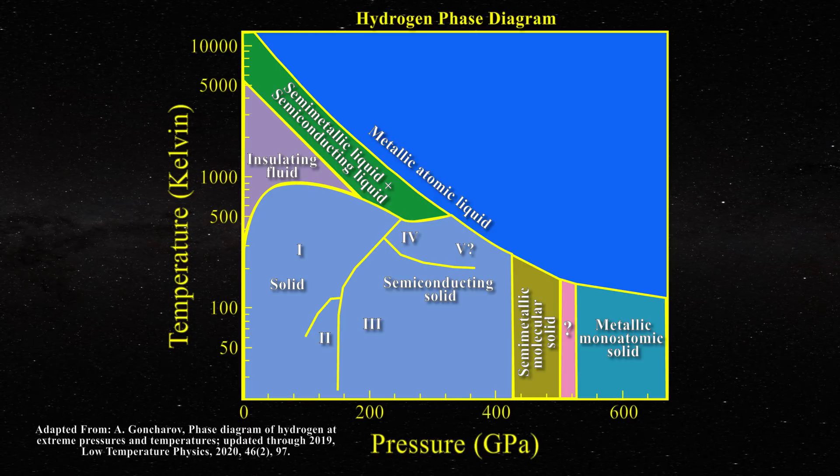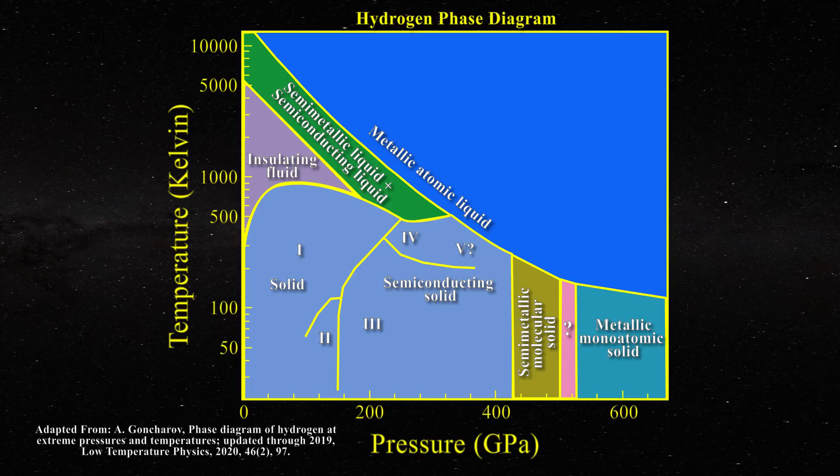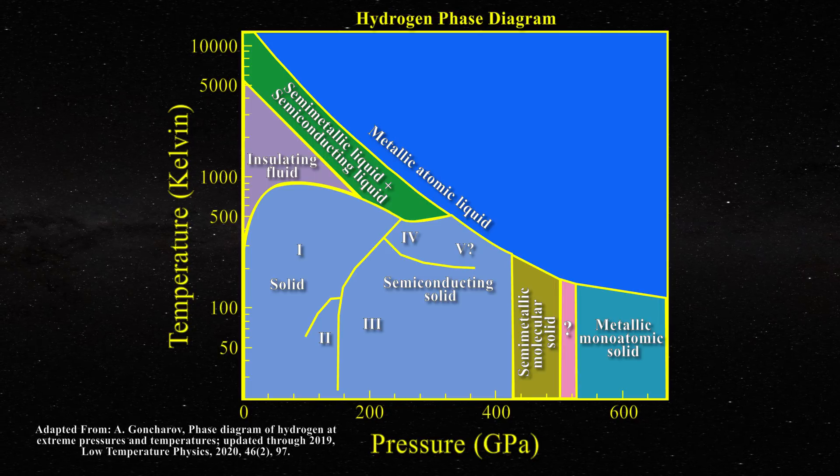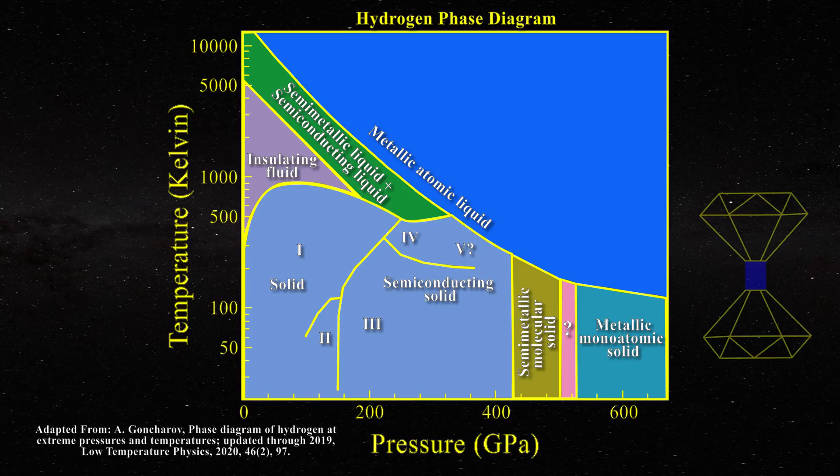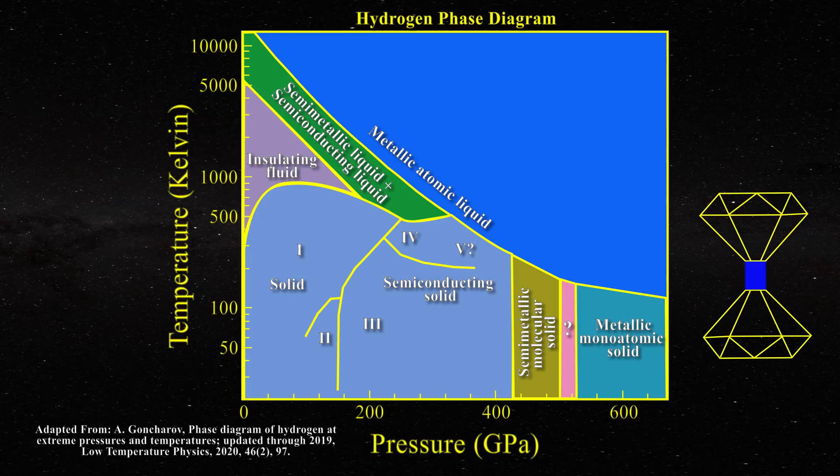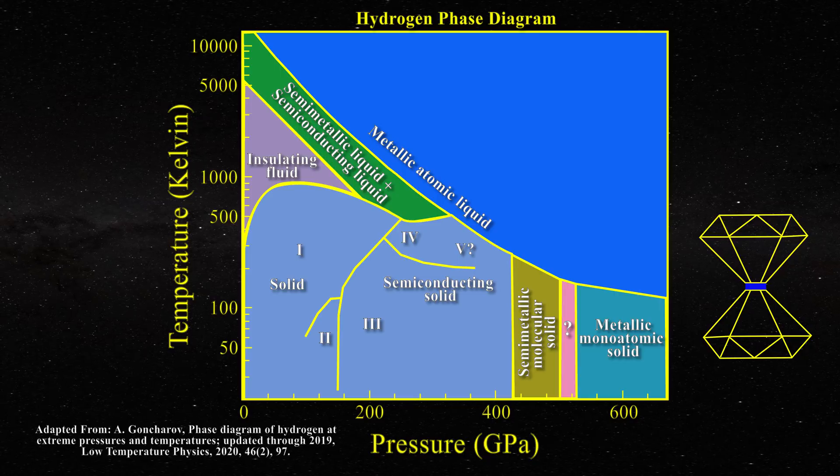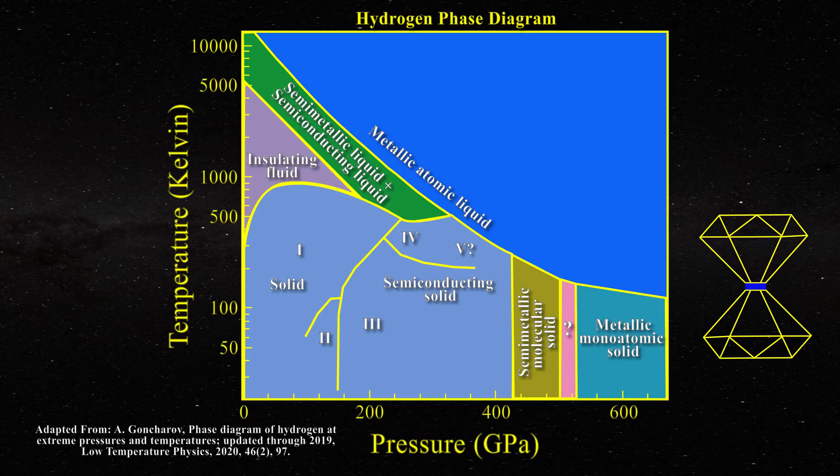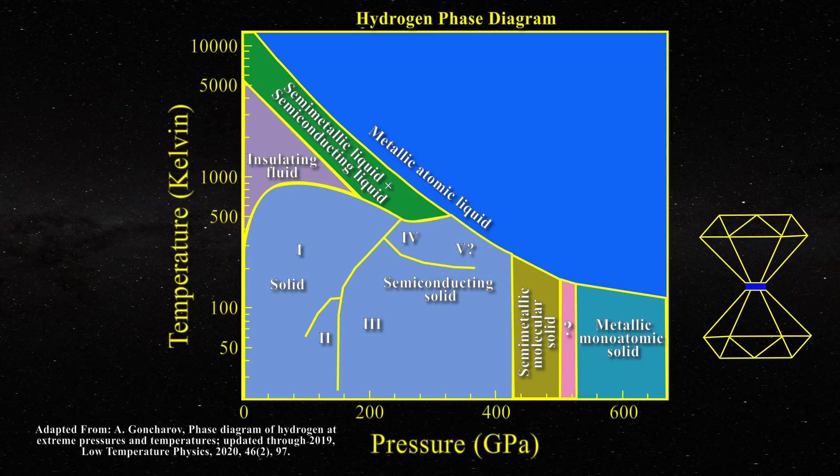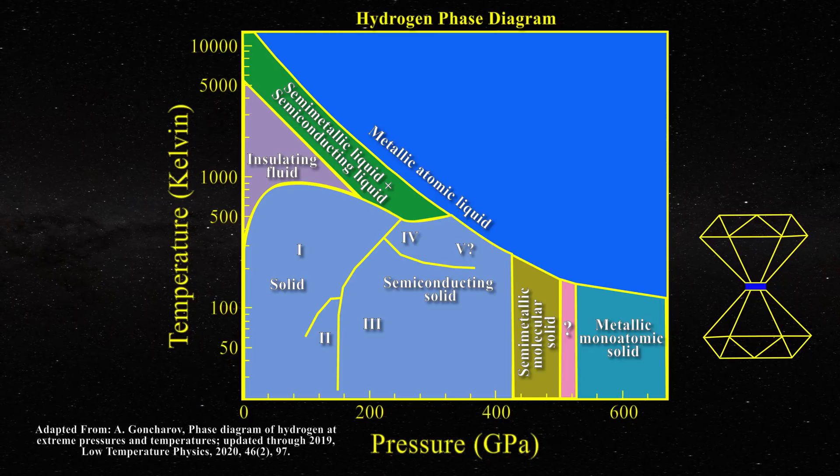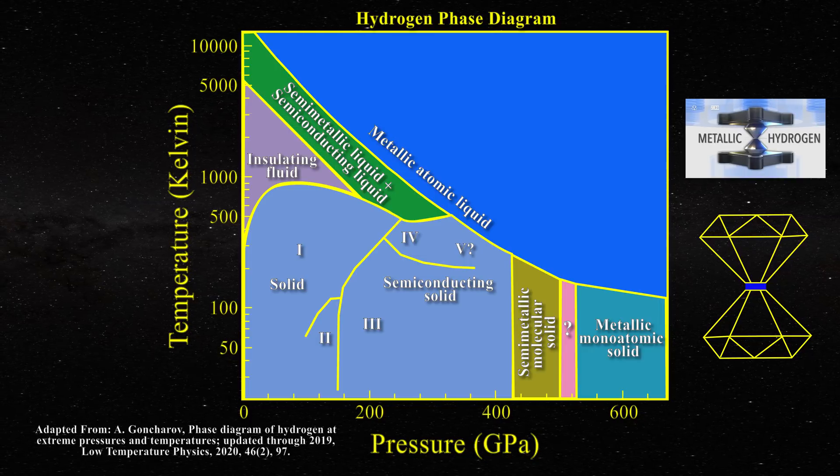The generation of a phase diagram at these temperatures and pressures for hydrogen is not a simple task. Often diamond anvils are used where hydrogen is being compressed between the faces of two diamonds. But at high pressures even diamond anvils can fracture, making the pressures above 300 gigapascals hard to achieve.